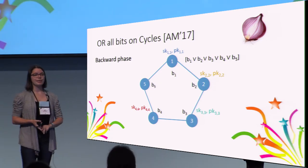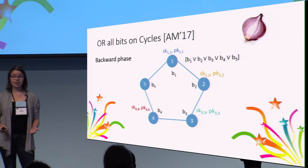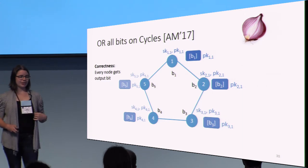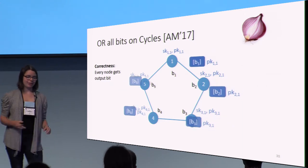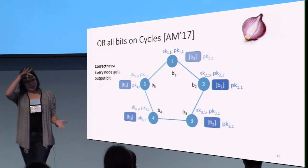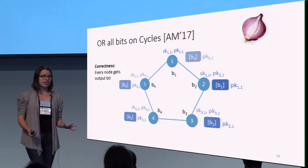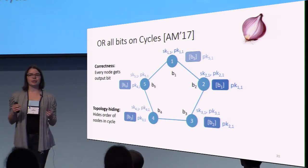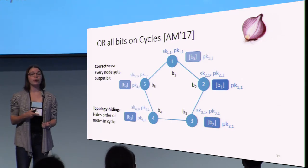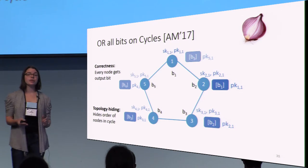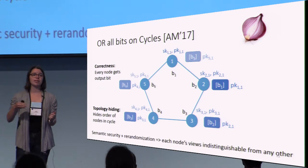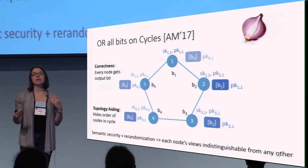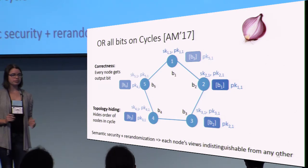Node 1 has the output bit. We now need to make sure every other node in the graph also gets the output bit. This isn't too hard — we'll just run the same protocol simultaneously for each node. For correctness: in round 1, everyone sends their bit to their neighbors, you run the protocol for every node, and every node gets the output bit at the end. To argue topology hiding of this protocol, note that everyone knows they're in a cycle — so what you're hiding is the order of the nodes in the cycle. You can see this intuitively because semantic security of the encryption means you can't tell when you get a 1 or a 0, and re-randomization via adding new public keys means each node's view is indistinguishable from any other node's view.